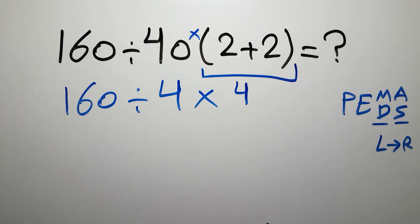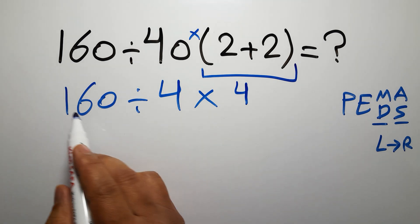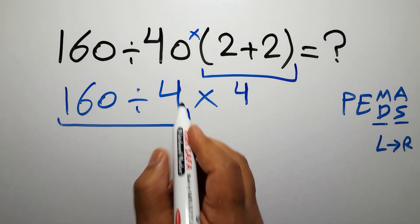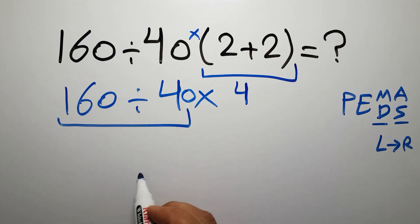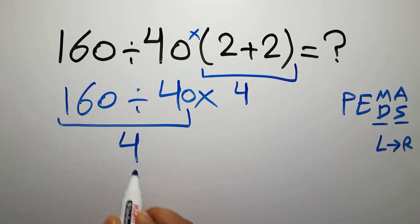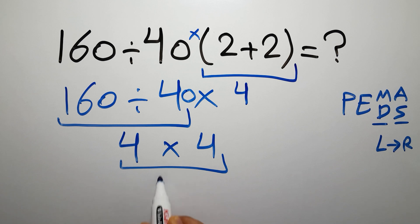Now, we have to do this division. 160 divided by 40 gives us just 4. And 4 times 4 equals 16.